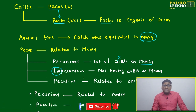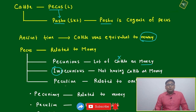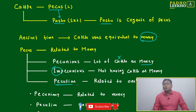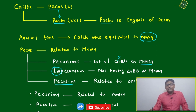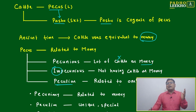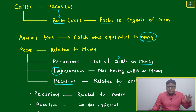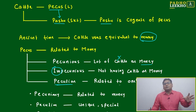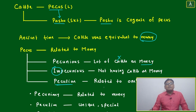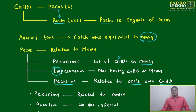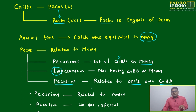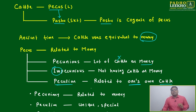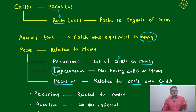The opposite is 'impecunious' — not having cattle or money. Then there is 'peculiar', which we use day to day without knowing it is related to cattle. Peculiar means if you have a particular kind of cattle of a different breed — something different from others — then it is related to one's own cattle. If we are discussing that particular cattle related to my cattle only, that is 'peculiar'.